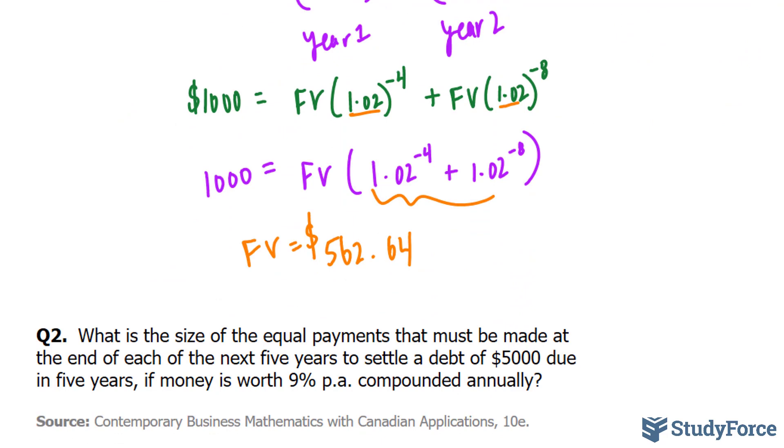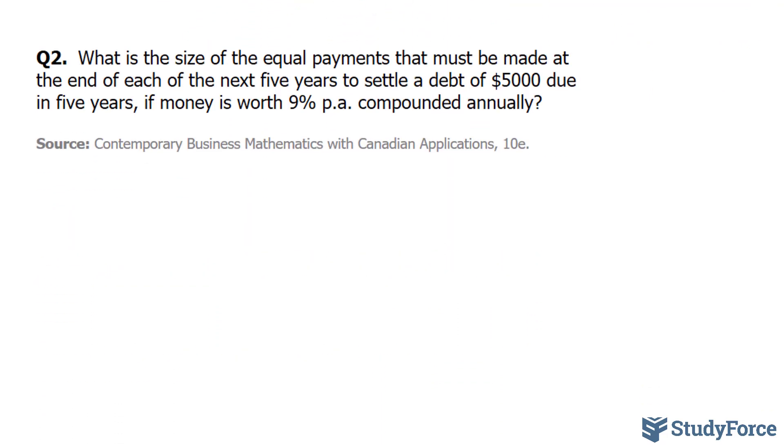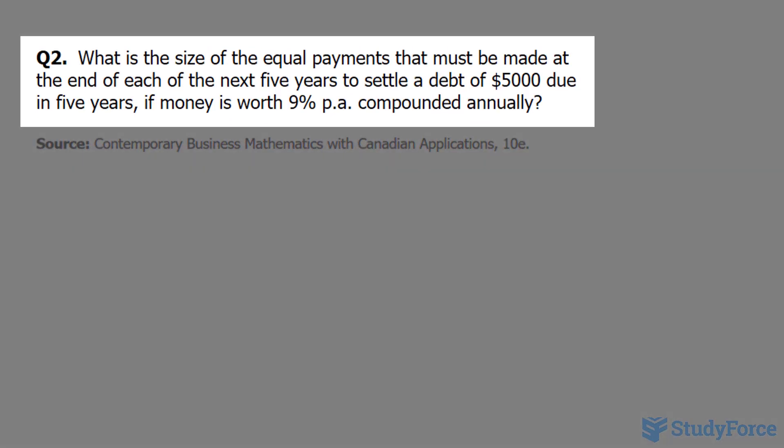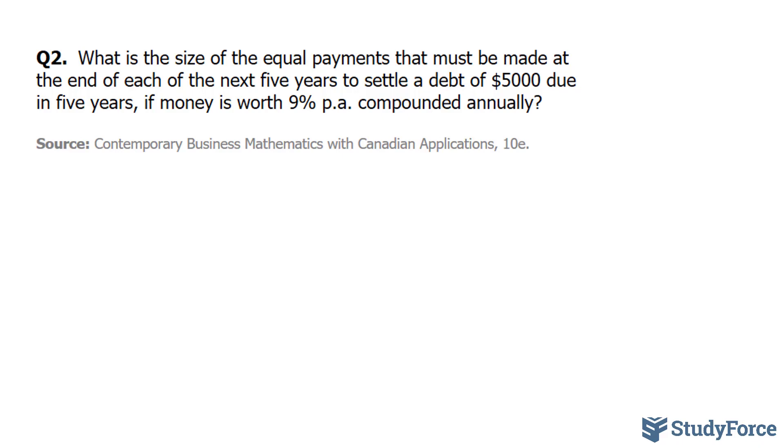That's how you answer question number 1. Let's apply that same logic to this question. What is the size of the equal payments that must be made at the end of each of the next 5 years to settle a debt of 5,000 due in 5 years if money is worth 9% compounded annually? That's per annum.